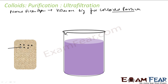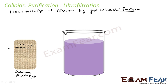If we can make the holes smaller, we can use filter paper to purify the colloidal solution. This is done by creating a graded filter paper for ultra filtration. We take ordinary filter paper and impregnate it with a colloidal solution to reduce its pore size.